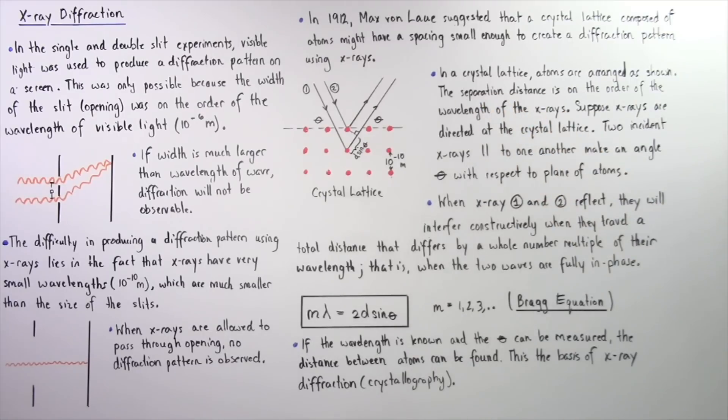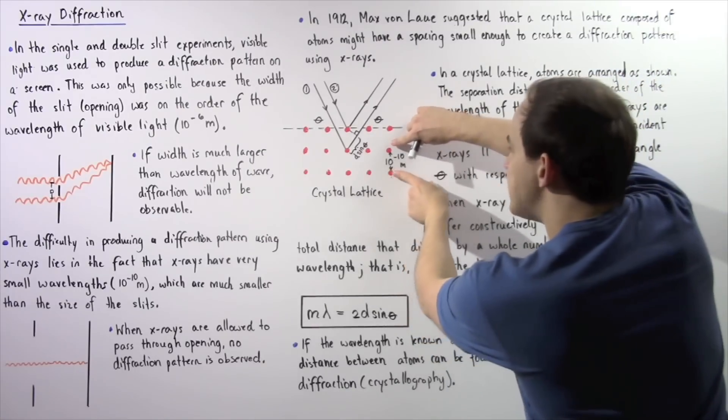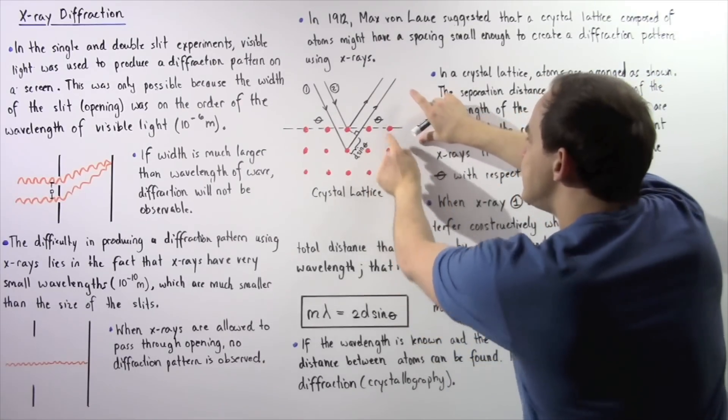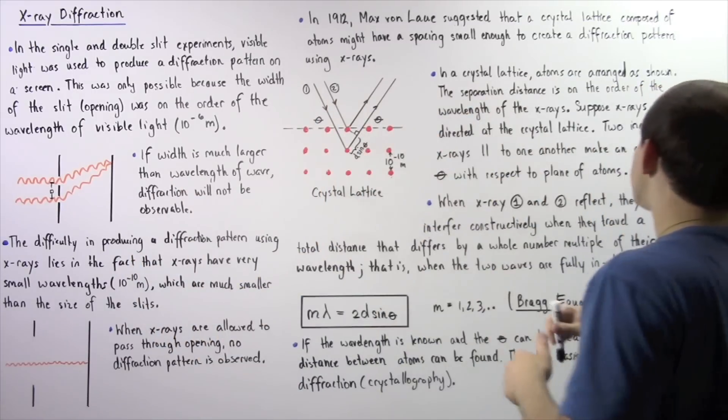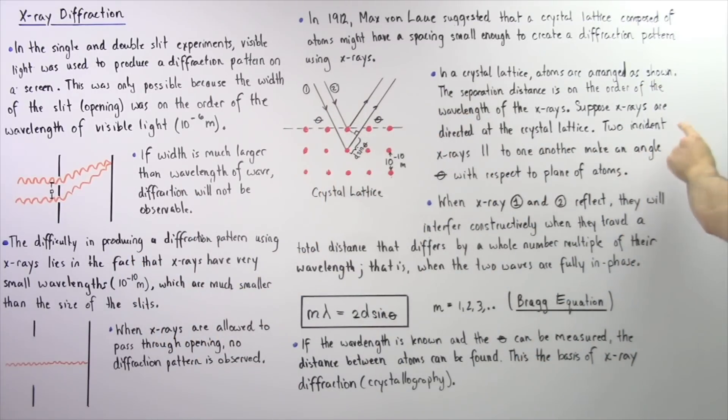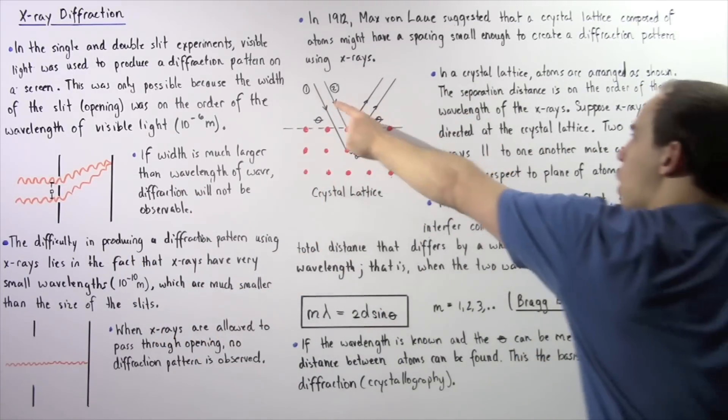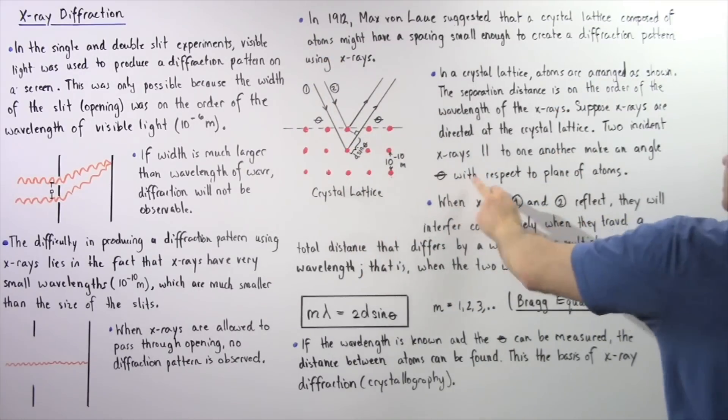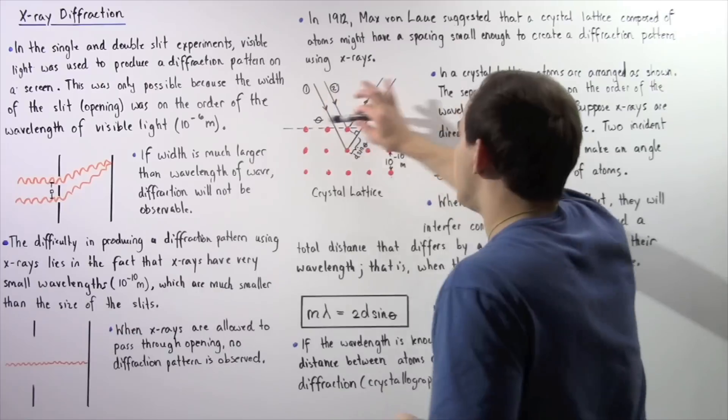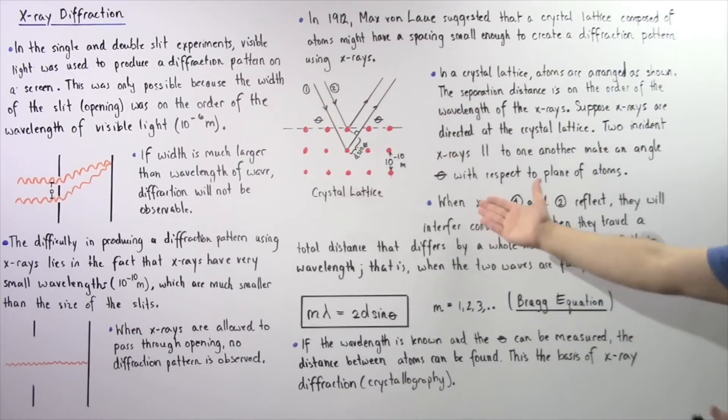The separation distance is on the order of the wavelength of the X-rays. In fact, the distance between our two atoms is 10 to negative 10 meters, which is about the same as the wavelength of our X-rays. Two incident X-rays, as shown, are parallel to one another and make an angle theta with respect to the plane of the atoms.